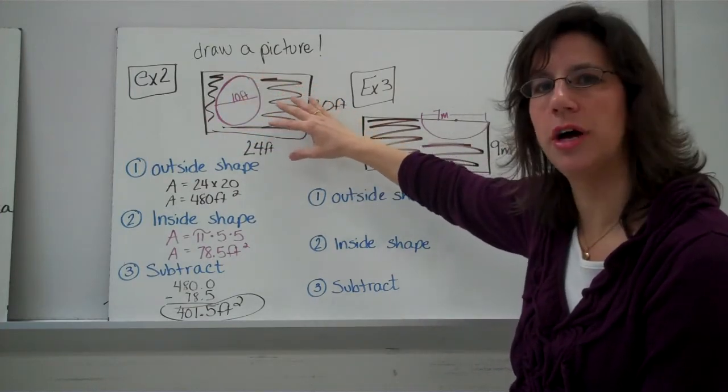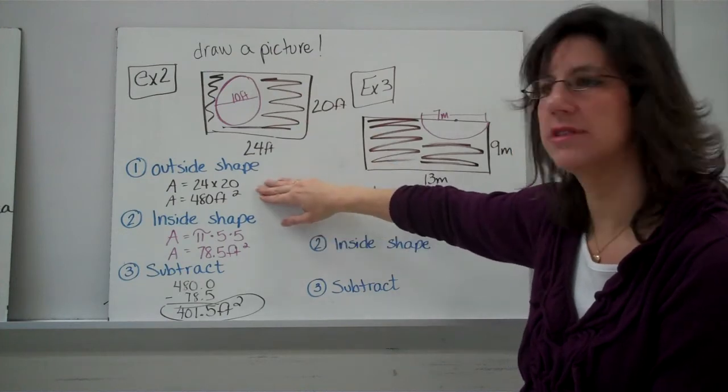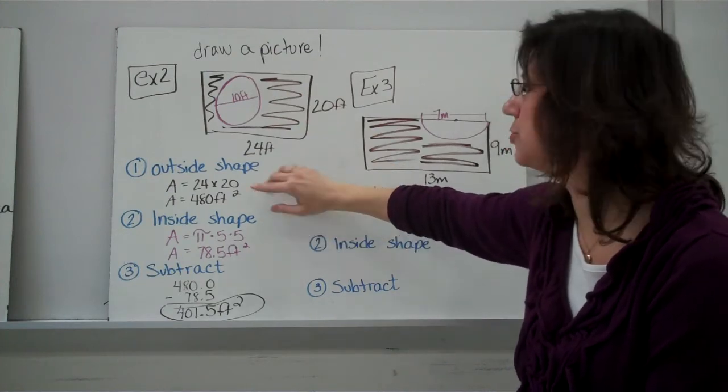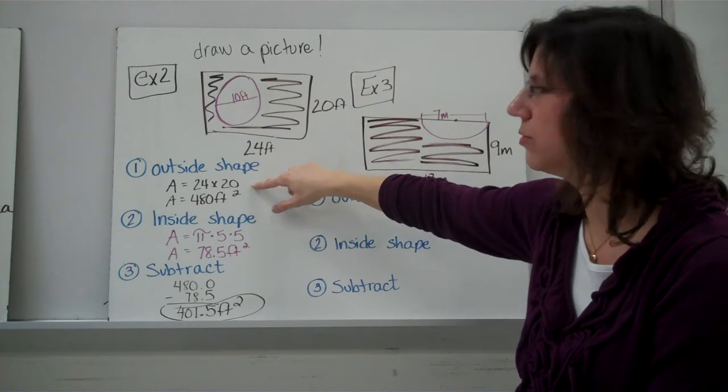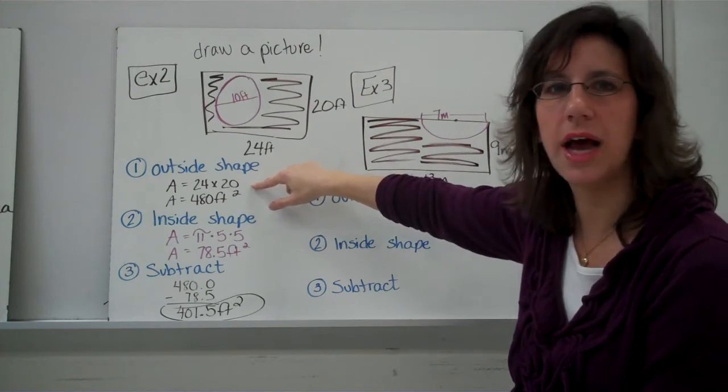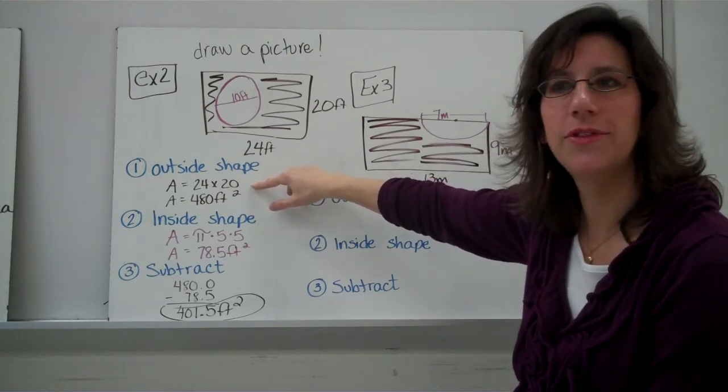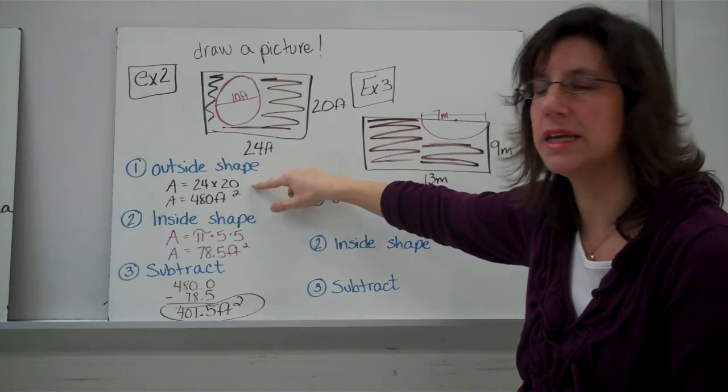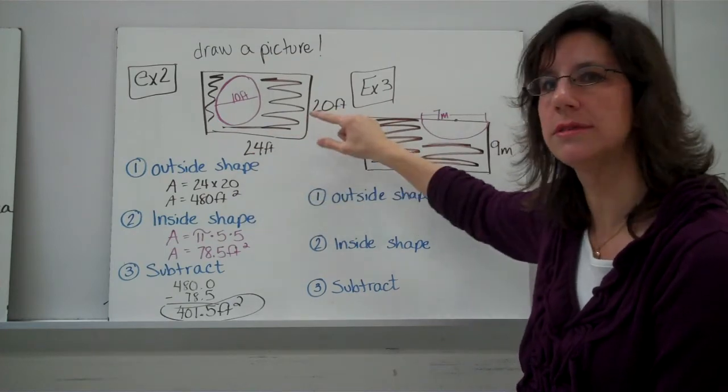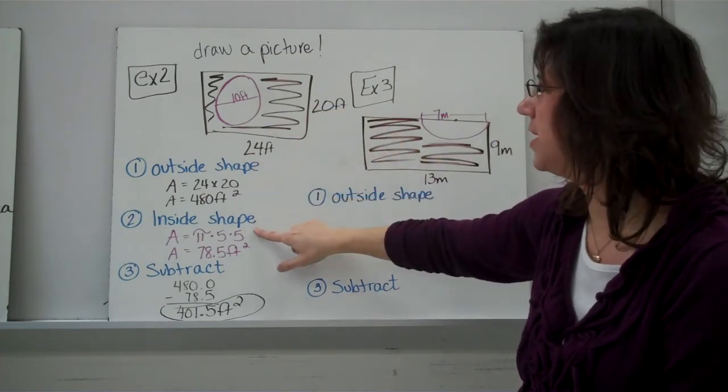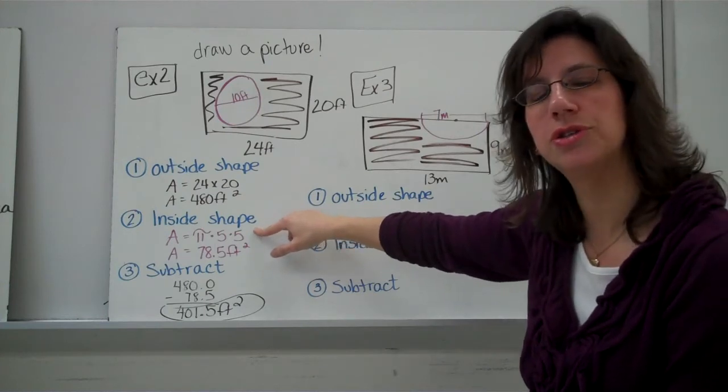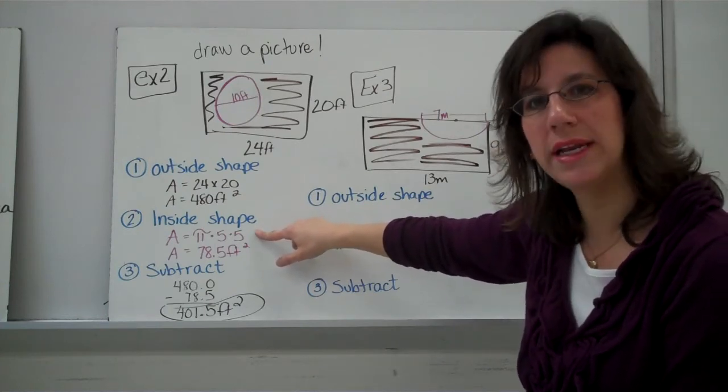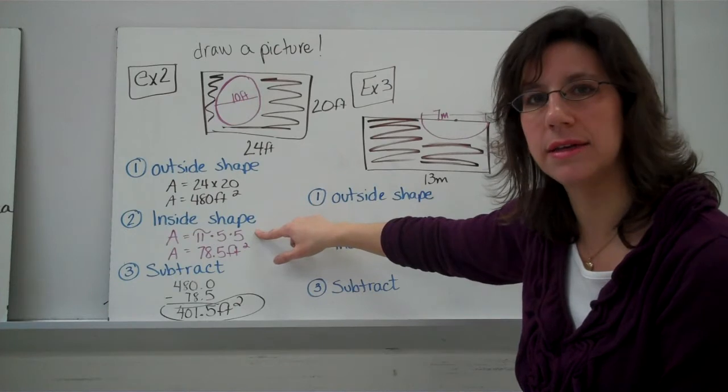Once you have the picture drawn, you should have found the area of the outside shape. Remember, it's a rectangle, so you're doing base times height, or length times width, or side times side. All of the words are changing, but the meaning is the same. You're multiplying two edges.